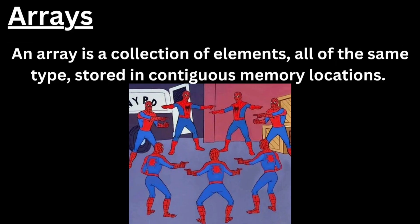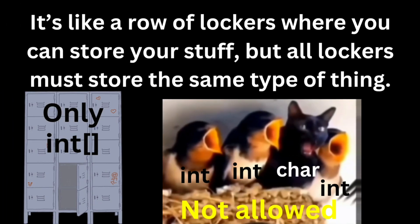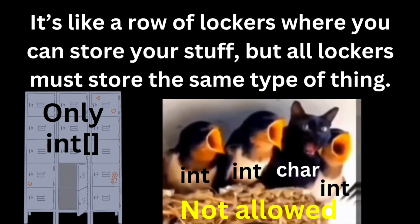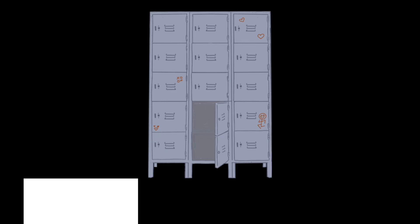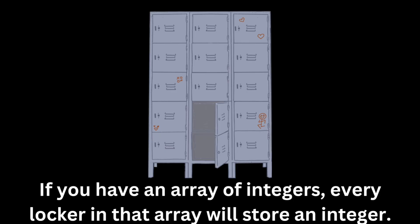Next up, arrays. An array is a collection of elements all of the same type, stored in contiguous memory locations. It's like a row of lockers where you can store your stuff, but all lockers must store the same type of thing. If you have an array of integers, every locker in that array will store an integer.